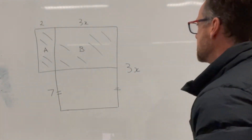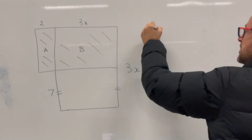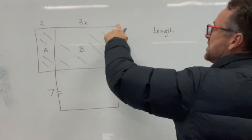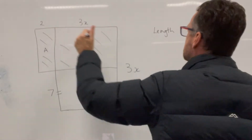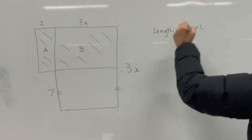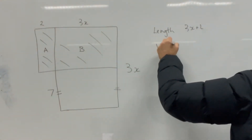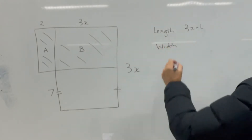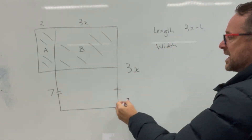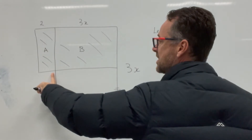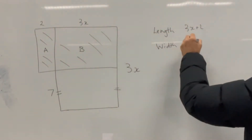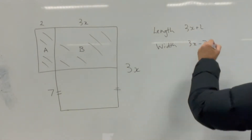Let's do the length first. The length is 3x plus 2. And the width — that's this distance all along here, take away that bit there — becomes 3x take away 7.